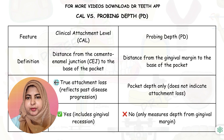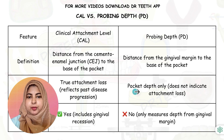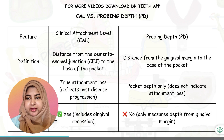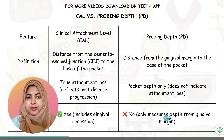Clinical attachment level measures the true attachment loss — it reflects past disease progression — while probing depth measures pocket depth only and does not indicate attachment loss. Is CAL affected by gingival recession? Yes, it includes the gingival recession. But probing depth is not affected by gingival recession; it only measures the depth from the gingival margin.